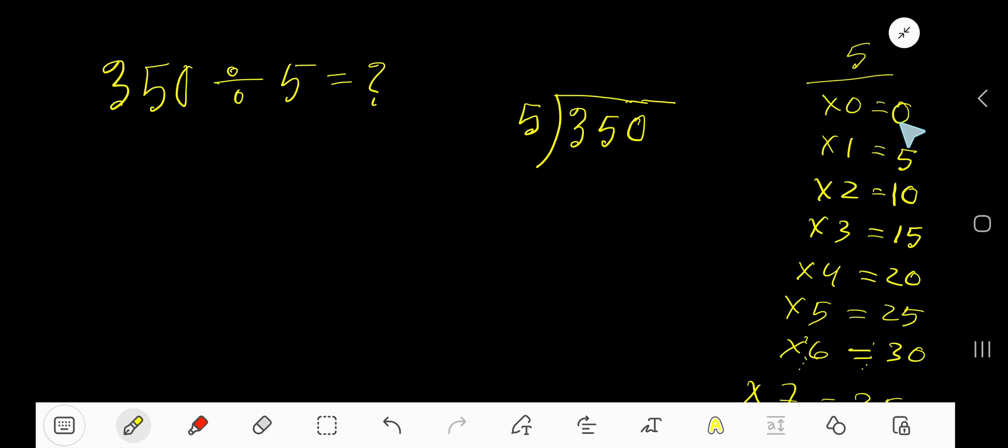To find the multiplication table of 5, just add 5 to the previous step: 0 plus 5 is 5, 5 plus 5 is 10, 10 plus 5 is 15, 15 plus 5 is 20, 20 plus 5 is 25.